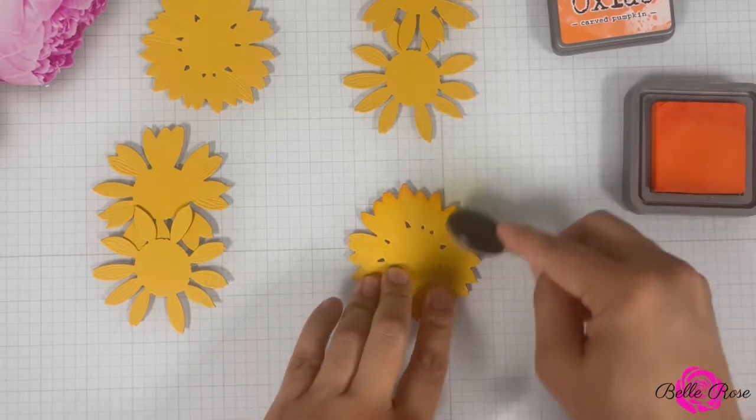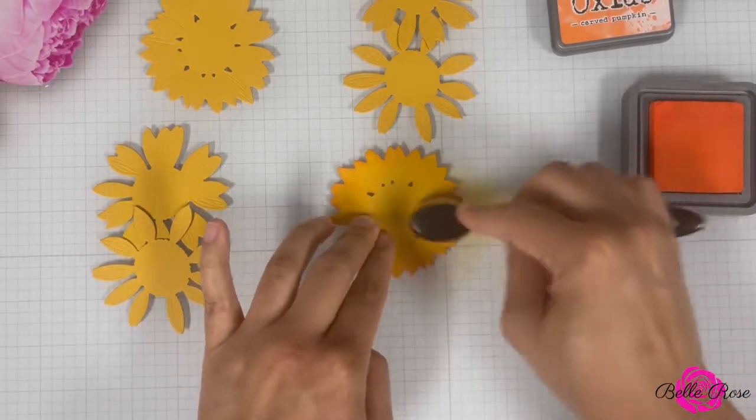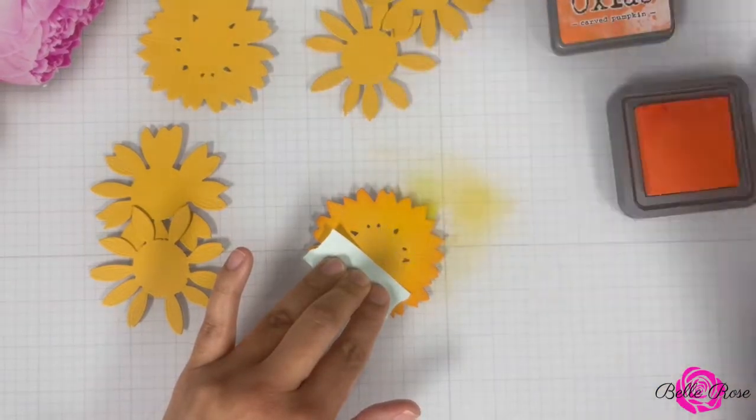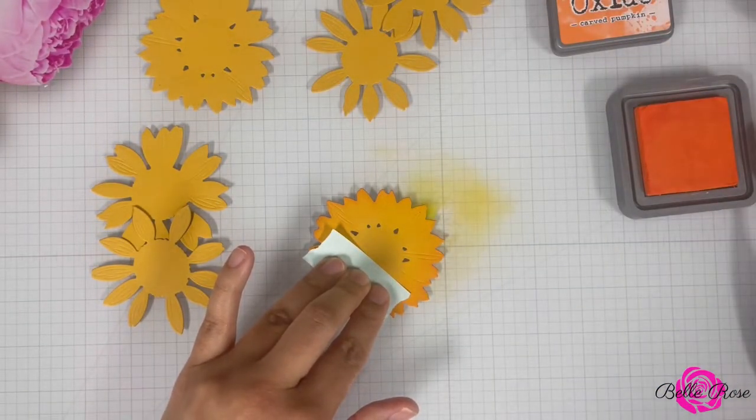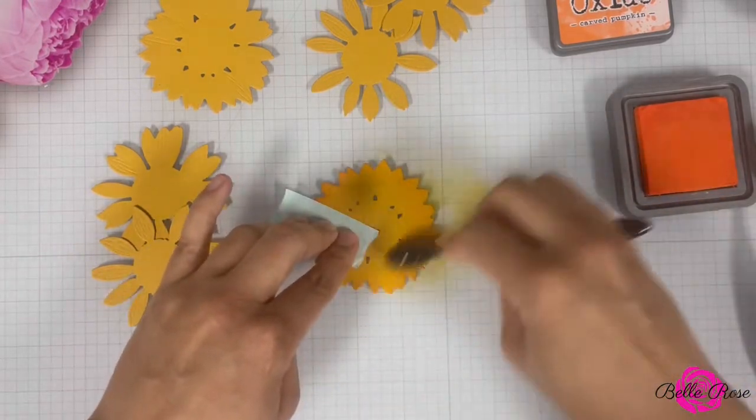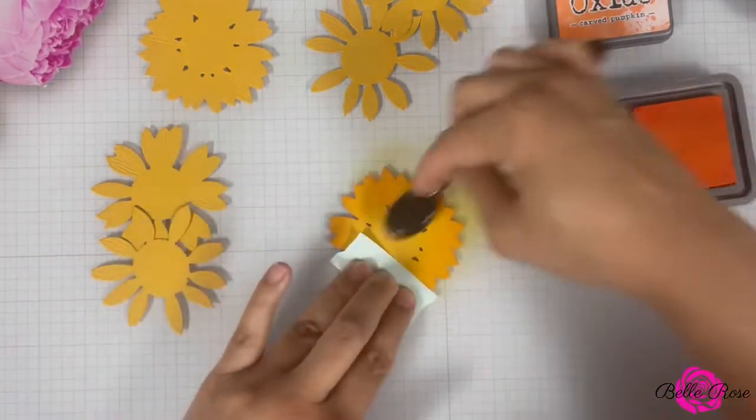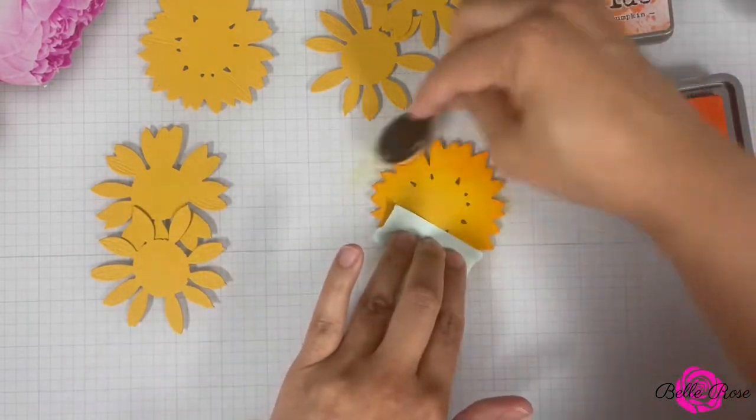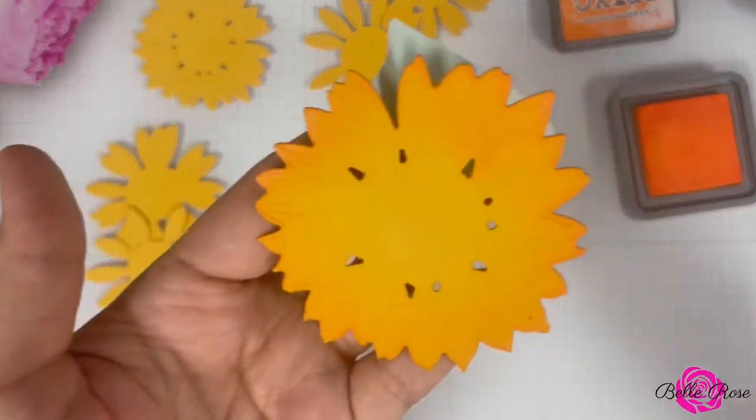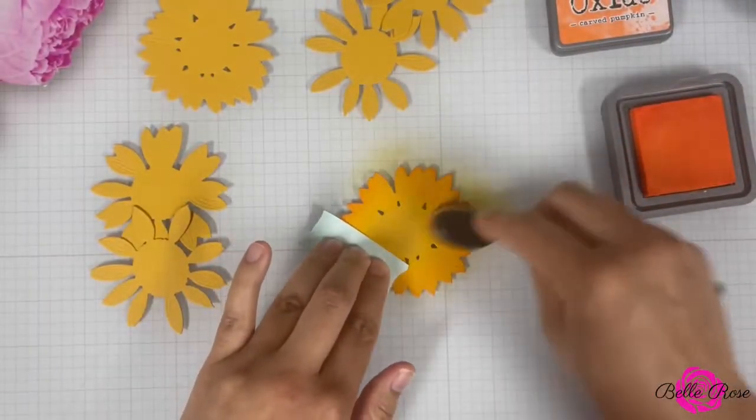When it comes to shading on colored cardstock, I refer back to the light, medium, dark technique that I use when I use Copic markers. For example, the cardstock that I'm using to create the sunflowers would be considered my medium color. Then Carved Pumpkin would be considered the darkest color, and Mustard Seed would be considered the lightest color.